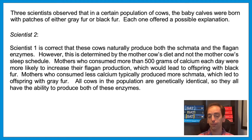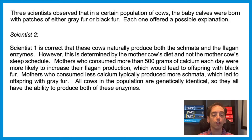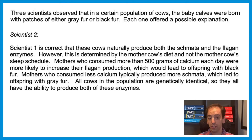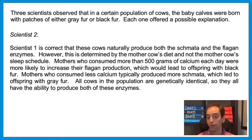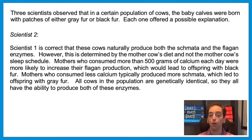Scientist 2. Scientist 1 is correct that these cows naturally produce both the schmata and the phlegon enzymes. However, this is determined by the mother cow's diet and not the mother cow's sleep schedule. Mothers who consumed more than 500 grams of calcium each day were more likely to increase their phlegon production, which would lead to offspring with black fur. Mothers who consumed less calcium typically produced more schmata, which led to offspring with gray fur. All cows in the population are genetically identical, so they all have the ability to produce both of these enzymes.